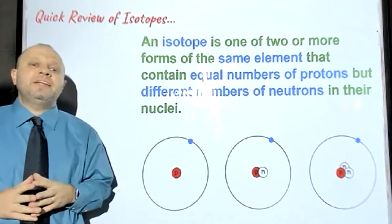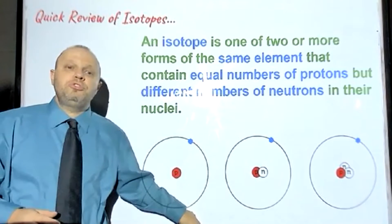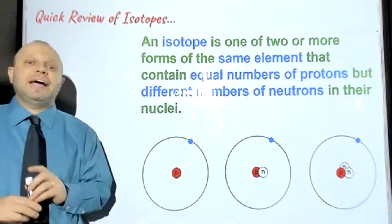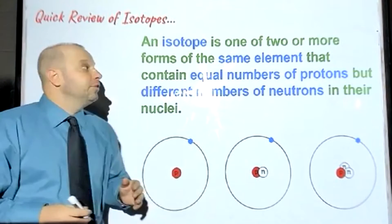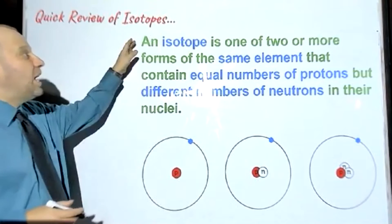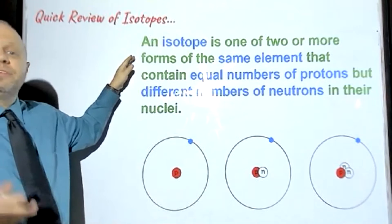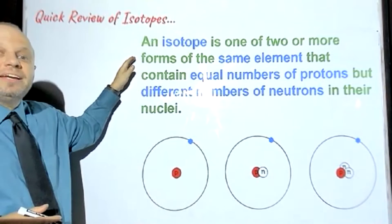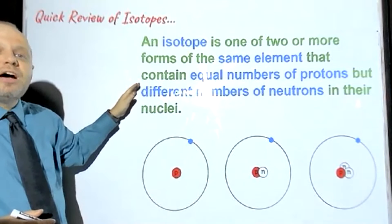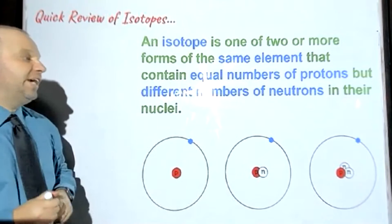Before we begin today, I wanted to show you a quick review of what we talked about last week. An isotope is one of two or more forms of the same element that contain equal numbers of protons but different numbers of neutrons in their nuclei.